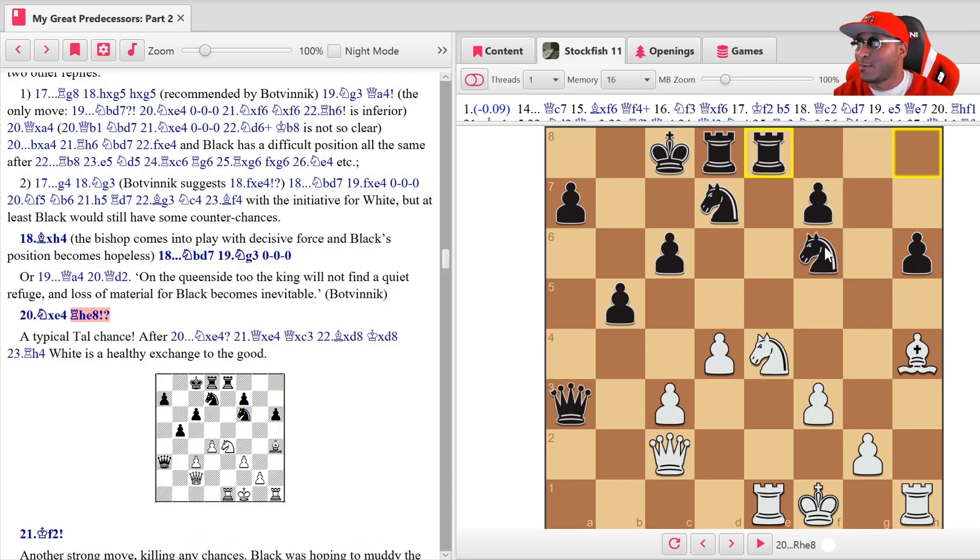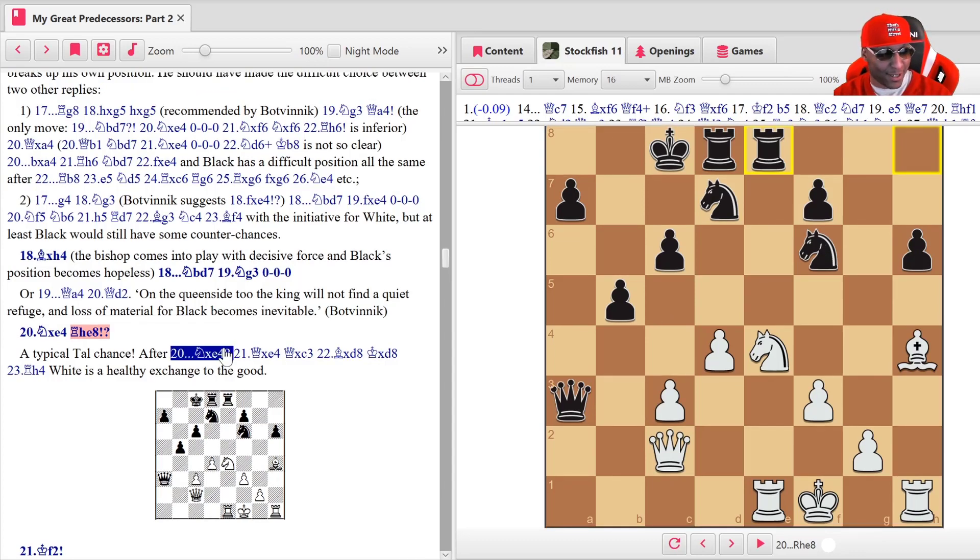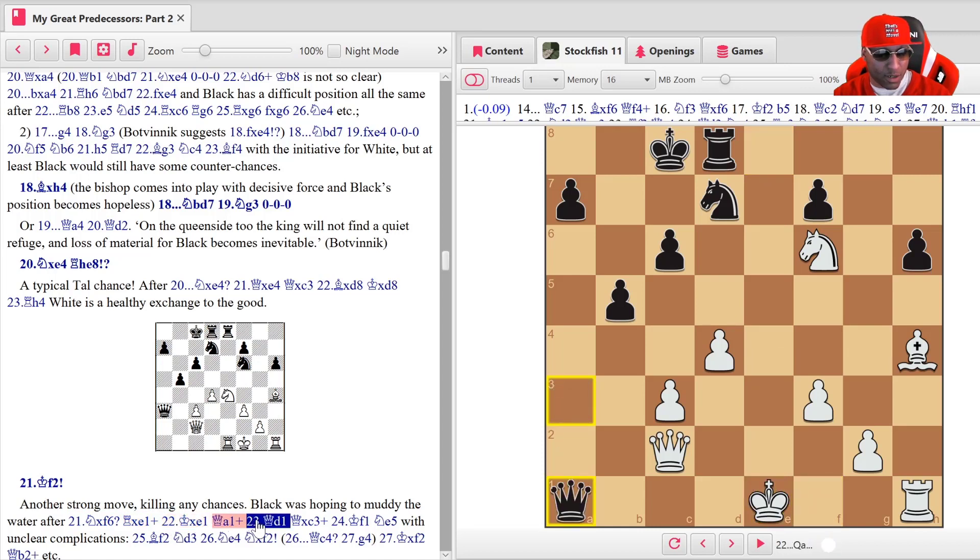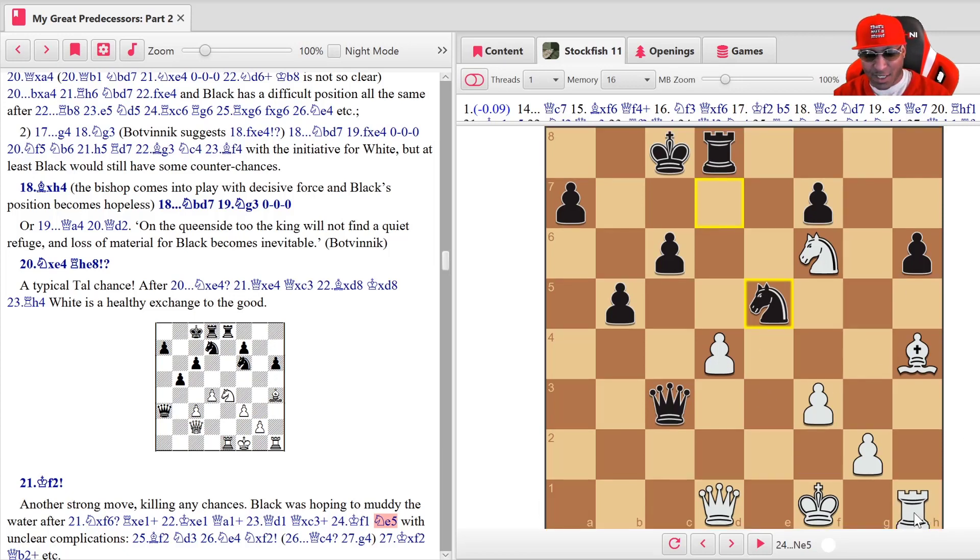There's a piece hanging. Tal is giving it up. Do you take this piece? You don't even think twice about it. That answer is a no. We're not taking f6. Let's see what happens. Actually rook h8. Let's see. Another move he played, king f2. But if knight takes f6, without even thinking, takes takes, queen a1, queen d1, queen takes, king f1, knight e5 with unclear complications.